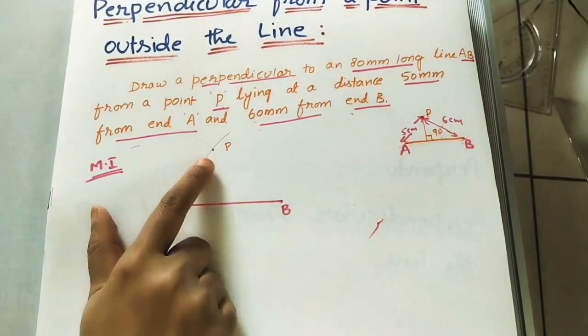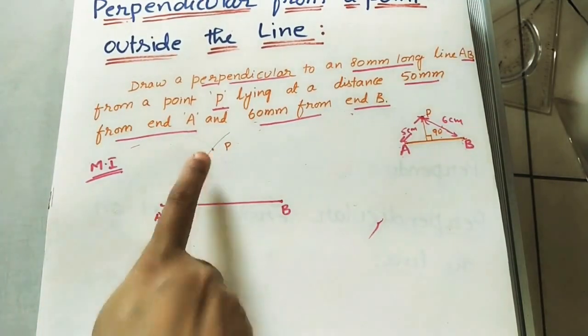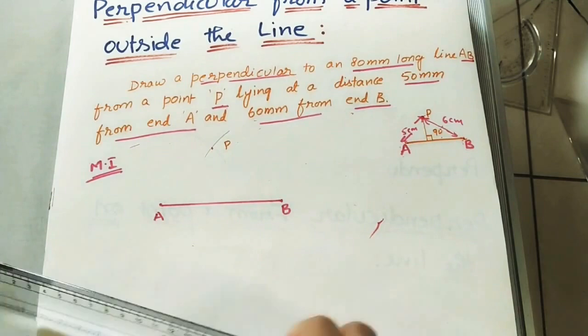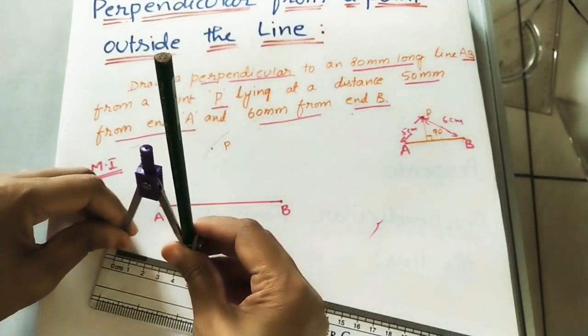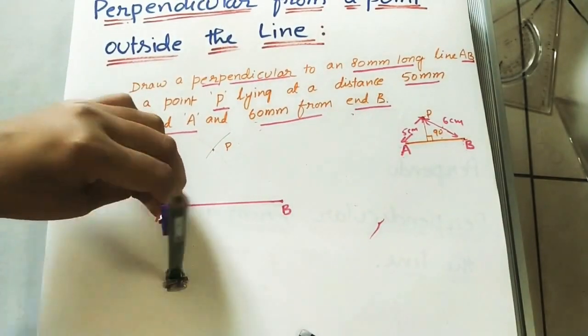So take the Q point this side with the same dimensions. From A it is 5 cm. Here also from A I am taking 5 cm arc. So take on the compass 5 cm. So from A do an arc.